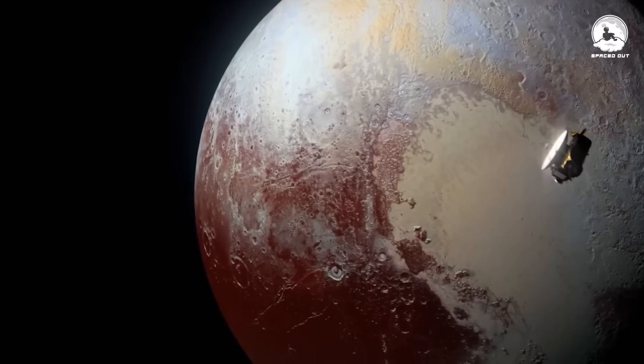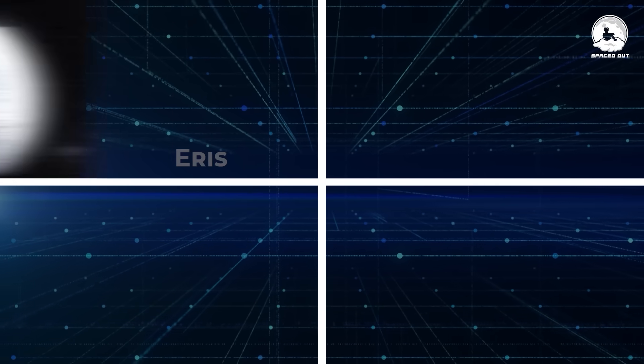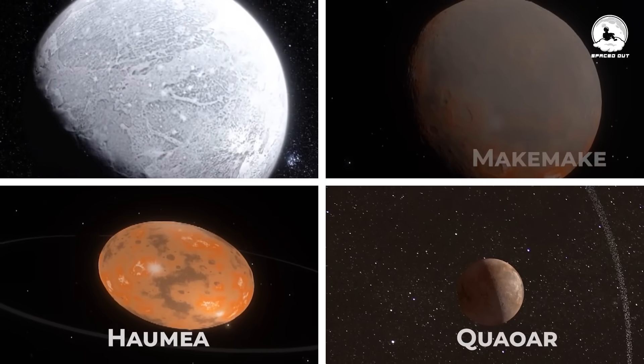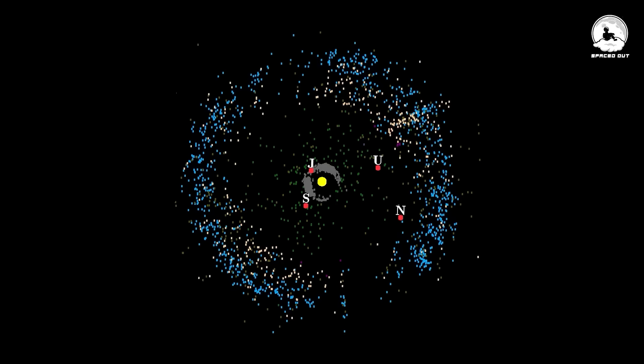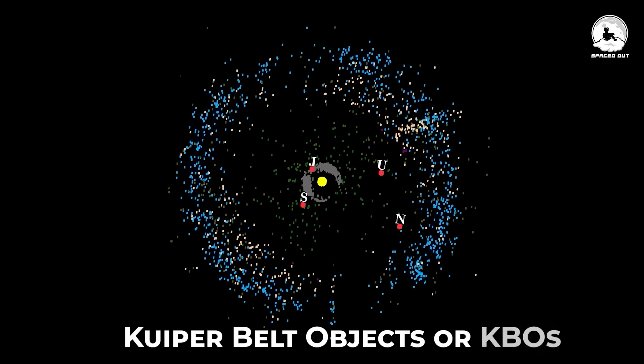Other dwarf planets discovered aside from Pluto are Eris, Makemake, Quaoar, and Haumea. These dwarf planets, together with comets, rocks, and ice, make up the Kuiper Belt objects or KBOs.